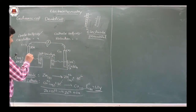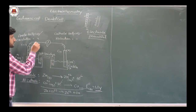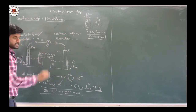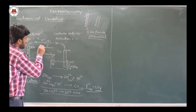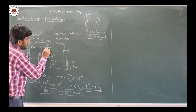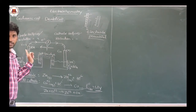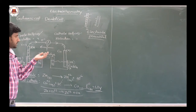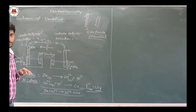Electrons from the zinc electrode are moving through the wire in the external circuit. Current should be considered in the opposite direction to the flow of charge. So since electrons are moving from zinc to copper, the current is moving from copper to zinc.